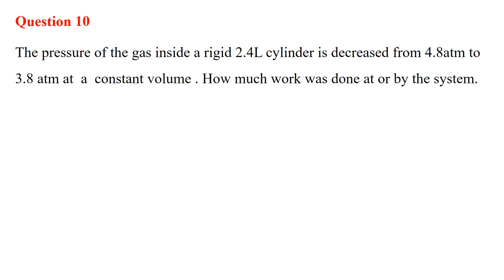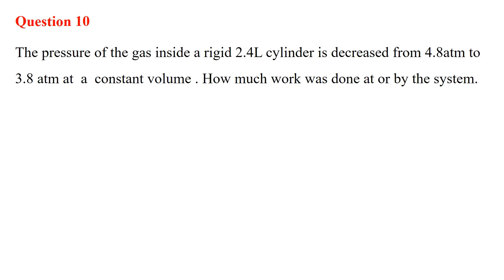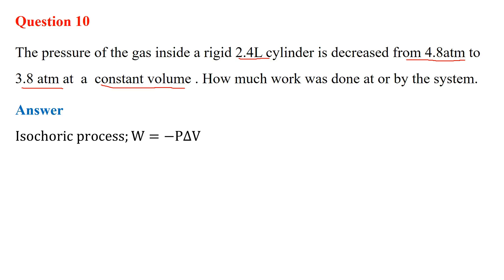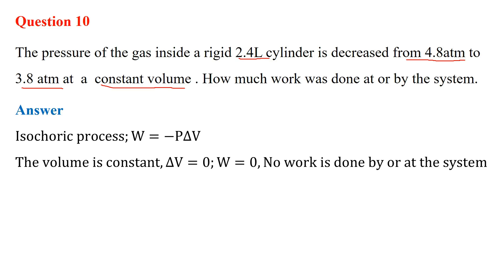Question 10: The pressure of the gas inside a rigid 2.4-liter cylinder is decreased from 4.8 atmospheres to 3.8 atmospheres at constant volume. Since the volume is constant, ΔV = 0. Using W = −PΔV and substituting ΔV = 0, the work done is zero. No work is done by or on the system when the volume is constant.